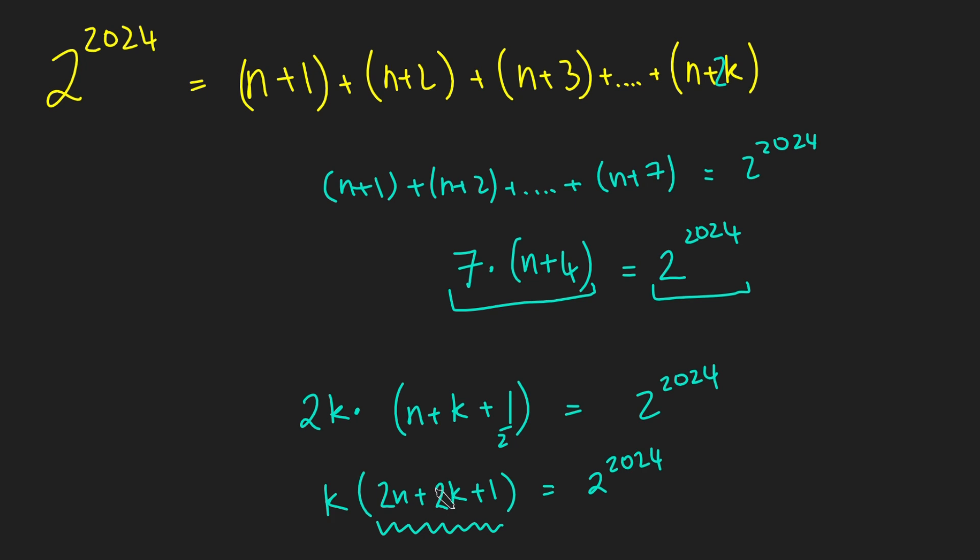Well, this thing here is an odd number. And so we don't know what that odd number is, but it's certainly an odd number. And it's bigger than 1, and that would be a factor of 2 to the 2024, which is an issue. Because 2 to the 2024 has no odd factors bigger than 1.